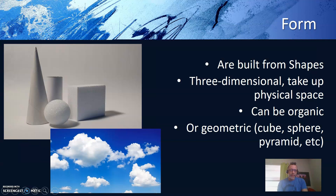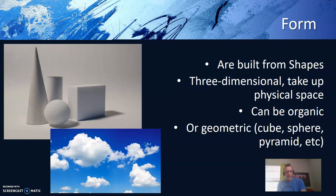Forms then turn three-dimensional. These are built from shapes. They're three-dimensional and take up physical space. They can be organic, such as clouds, or geometric, and have names such as cubes, spheres, pyramids, and others.